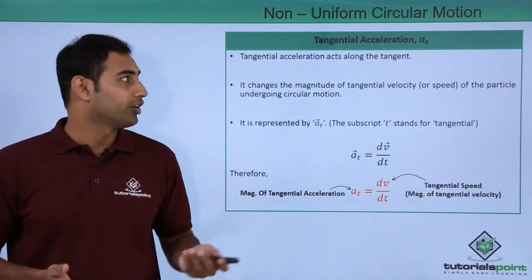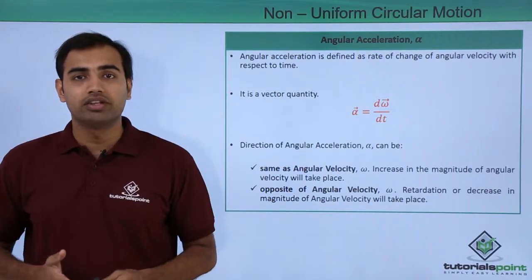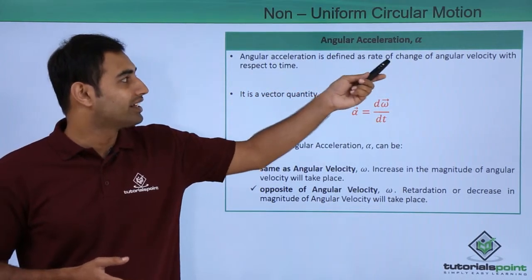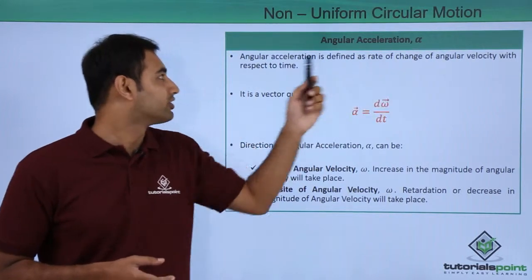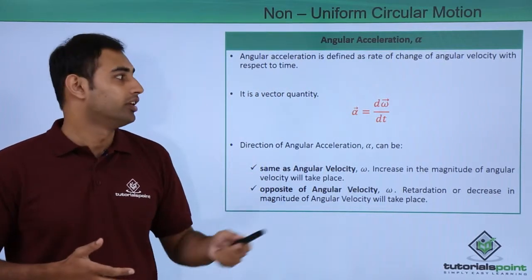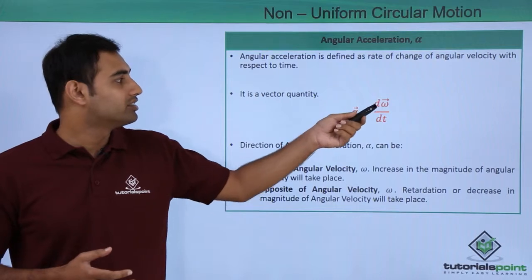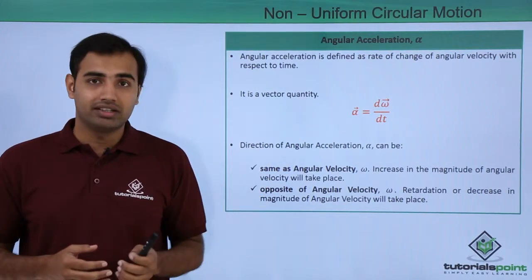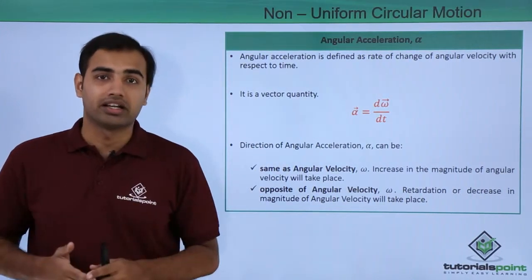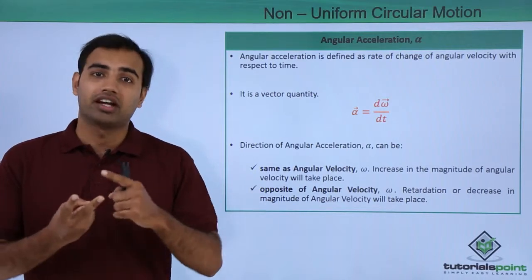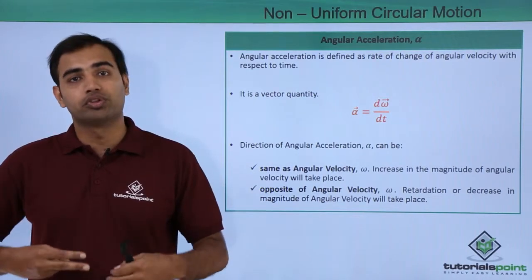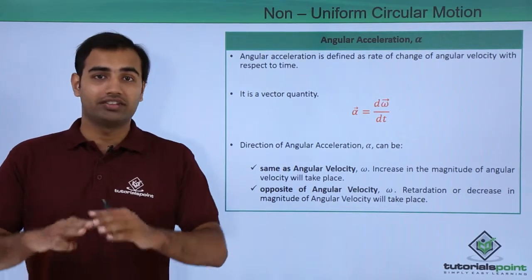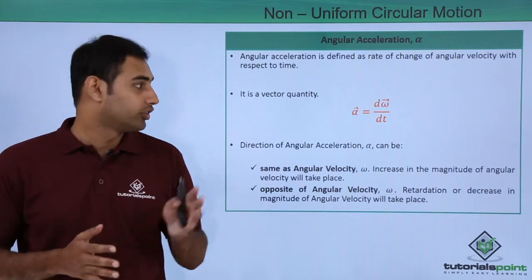Now let's talk about angular acceleration. The symbol used to represent it is alpha. Angular acceleration is defined as the rate of change of angular velocity with respect to time, and it is also a vector quantity. Alpha vector can be written as d omega vector by dt. In our circular motion kinematics, we had angular displacement theta, angular velocity omega, and now we introduce angular acceleration alpha — completing the entire kinematics for circular motion.